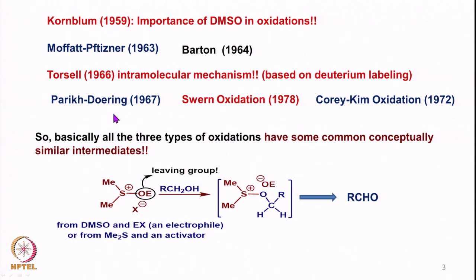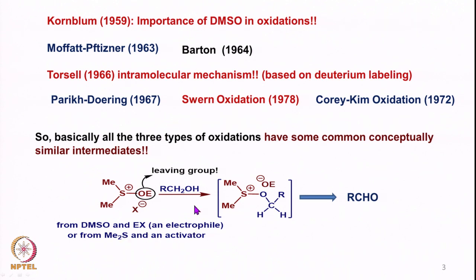We discussed all these oxidations which are similar in concept: Pfitzner-Moffatt, Swern oxidation, and Corey-Kim oxidation. As we discussed, they were all conceptually similar with similar types of intermediates — first upon reaction with DMSO, followed by the alcohol to form this intermediate, and then of course going to the aldehyde. This intermediate was formed from DMSO and an electrophile, or from DMSO and an activator, as in the Corey-Kim oxidation.